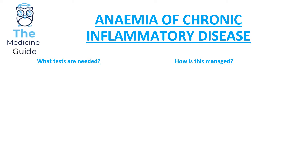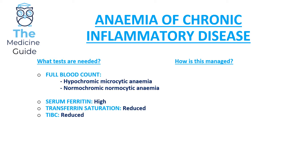A full blood count may show either microcytic or normocytic anaemia. Serum ferritin is high, transferrin saturation is reduced, and TIBC is reduced. These three values — ferritin, transferrin, and TIBC — are something you need to know well, as you'll often be asked to differentiate between anaemia of chronic inflammatory disease and iron deficiency anaemia. Ferritin is elevated because it is an acute phase reactant raised in inflammatory conditions.